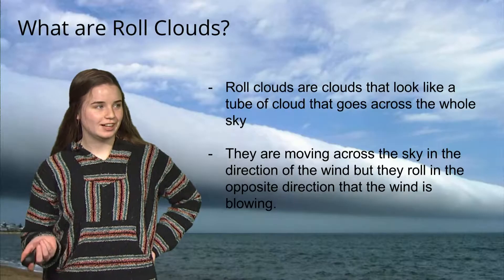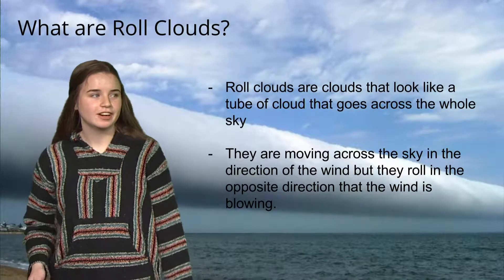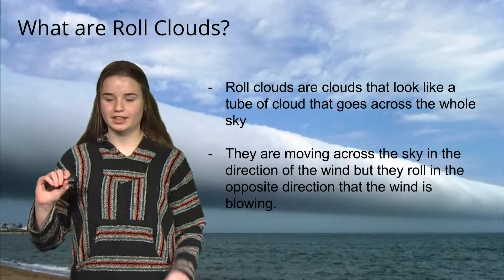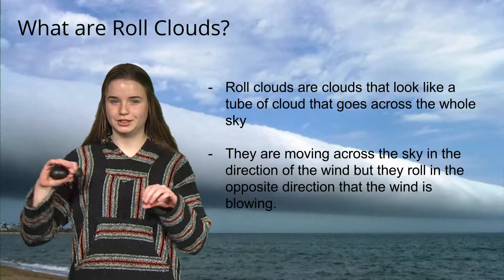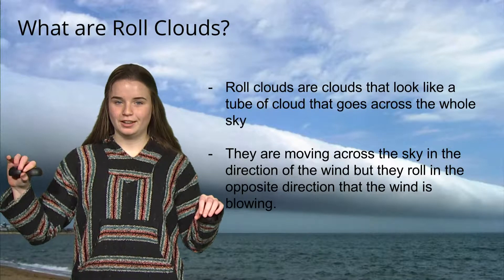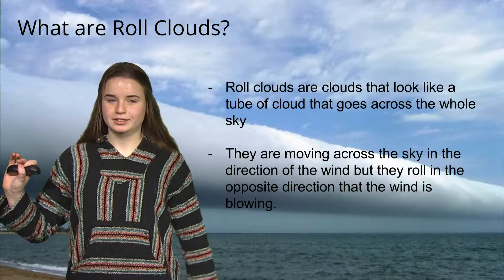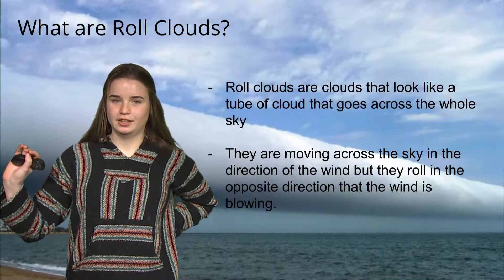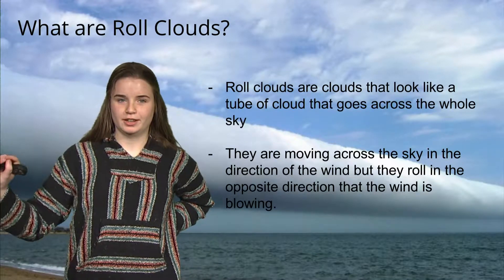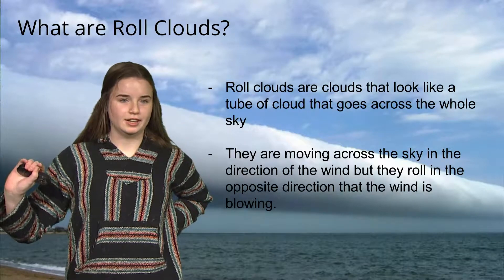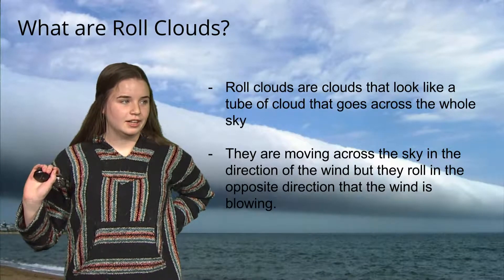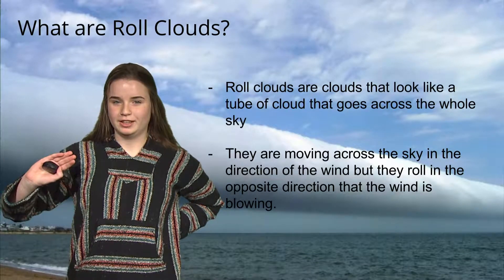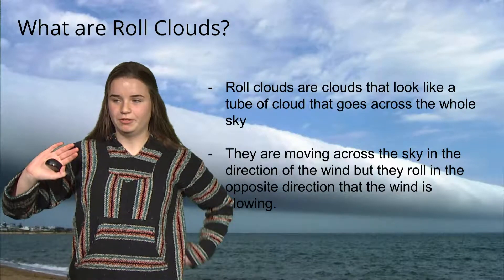I'll be presenting on roll clouds. So what are roll clouds? They're clouds that look like a long tube of cloud that goes across the whole sky — you'll see it from one horizon to the other. They're moving across the sky in the direction of the wind.